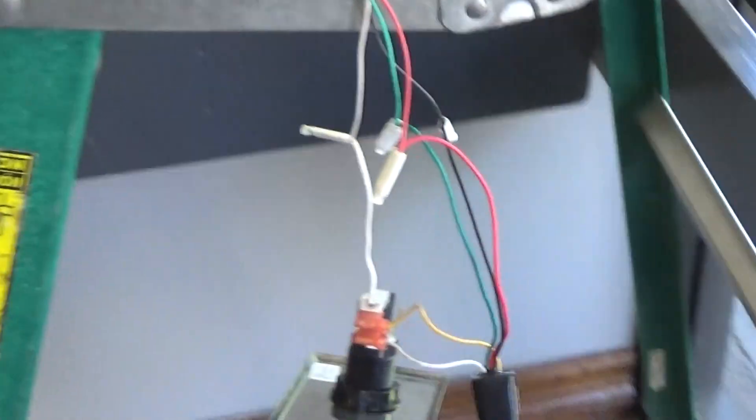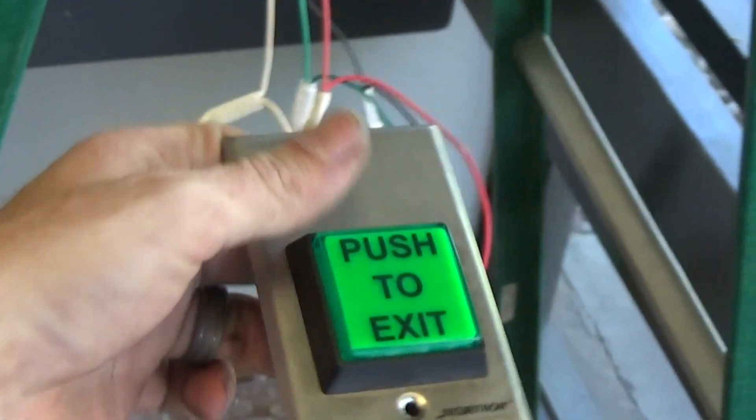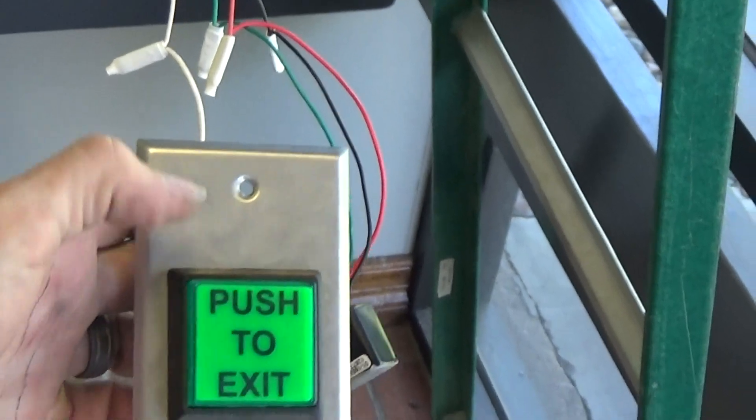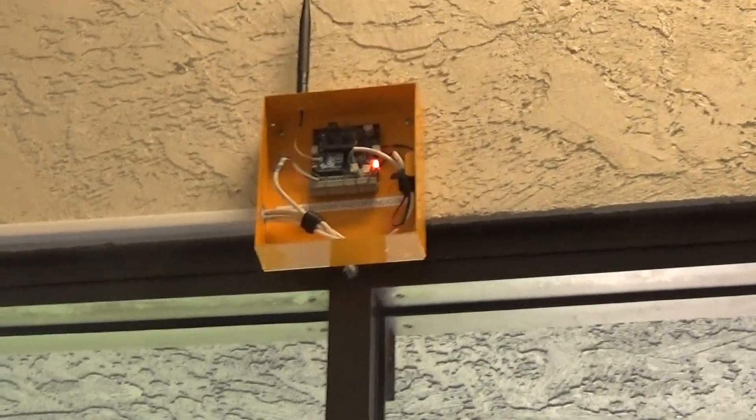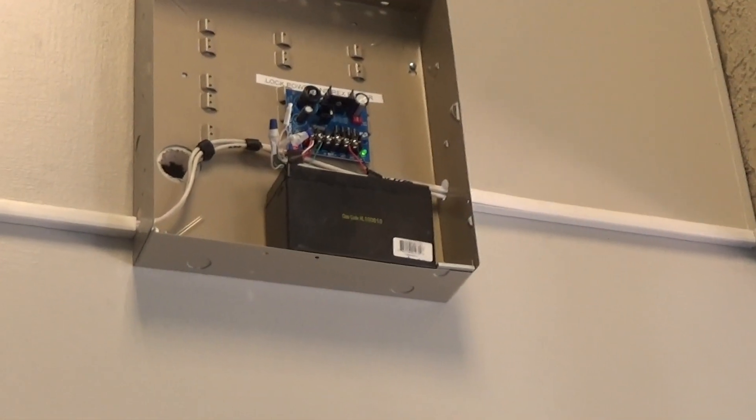It's hooked up to a pair of maglocks here. We've got the request to exit button hooked up here with a 40-second timer on it right there. We've got the card reader system, then we've got a secondary SMP3 power supply, then you've got a request to exit motion right there.